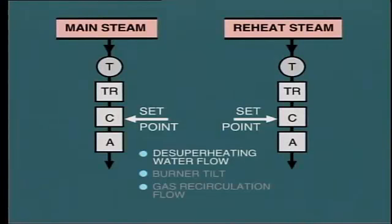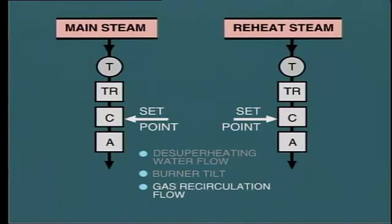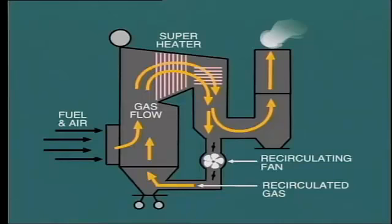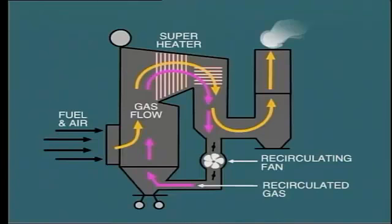Steam temperature control is also independent of the combustion control system. Final and reheat steam temperatures are measured and processed through a controller to actuate one or more attempering devices, such as adjusting the flow of de-superheating water, adjusting the tilt of the burners, or adjusting the flow of gas recirculation. This last technique provides the same effect as firing with increased excess air but without the increased heat loss up the chimney. The recirculating gas merely circulates in a closed loop while increasing the mass of gas flow across the superheater tubes, with consequent increase in main steam and reheat temperatures.